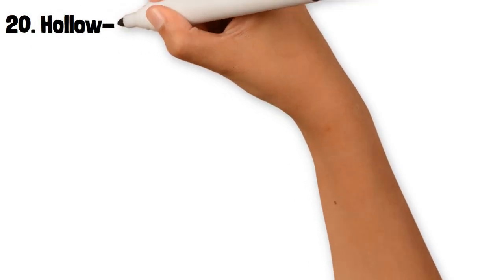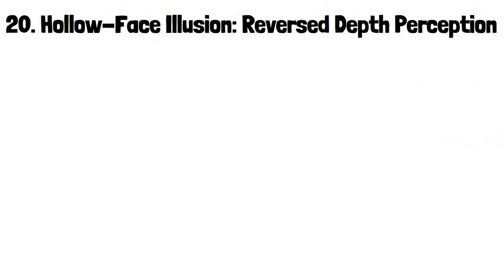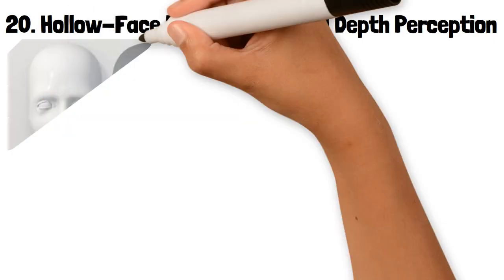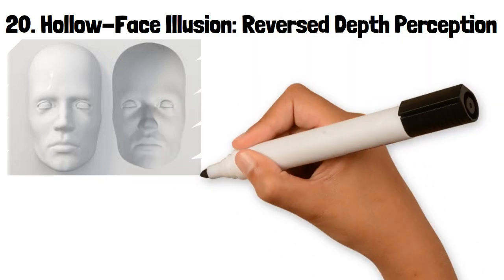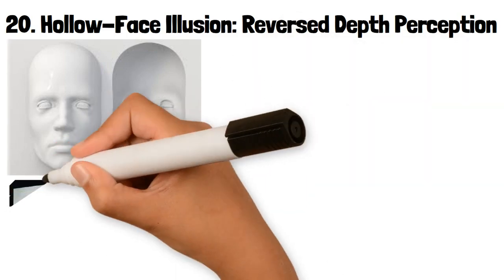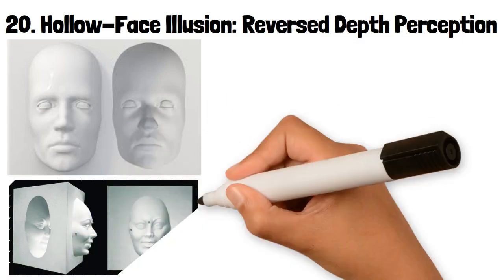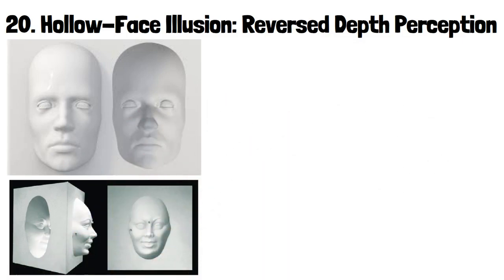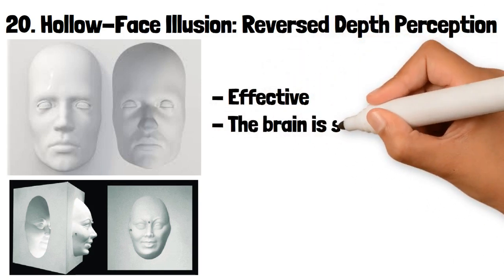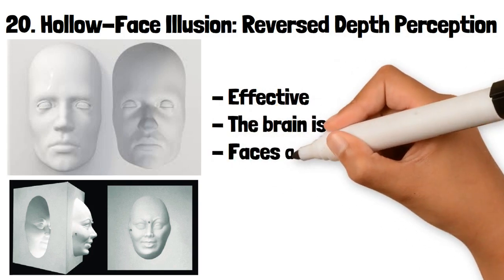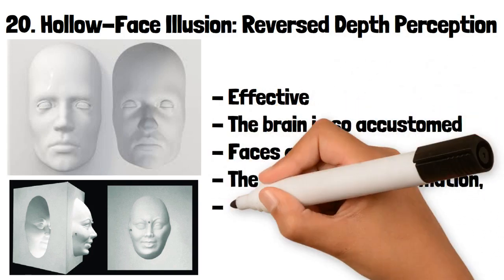20. Hollow Face Illusion: Reversed Depth Perception. The hollow face illusion occurs when a concave face mask is perceived as a normal convex face. Despite the actual depth of the face being inverted, the brain insists on interpreting it as a regular face leading to a strong illusion of depth reversal. This illusion is particularly effective because the brain is so accustomed to seeing faces as convex that it overrides the actual visual information, creating a convincing false perception.